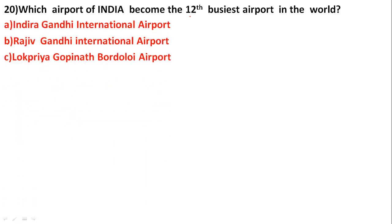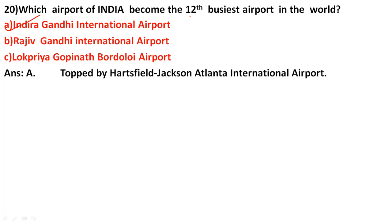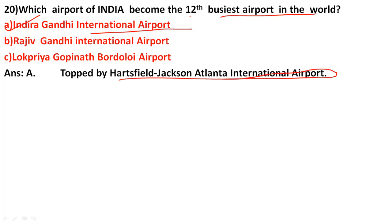Which airport of India became the 12th busiest airport in the world? The options are Indira Gandhi, Rajiv Gandhi, and Lokpriya. The correct answer is option A: Indira Gandhi International Airport, Delhi. The top position goes to Hartsfield-Jackson Atlanta International Airport, USA.